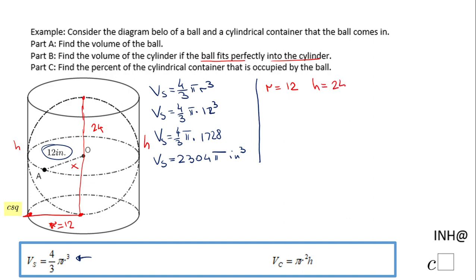Now we can use this formula here and find the volume of the cylinder, which is πr²h. So in this case we have π times the radius which is 12, 12 squared times 24. So we'll have π times 144 times 24. So the final answer for the volume of the cylinder will be 3456π.